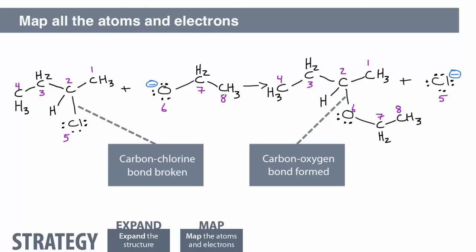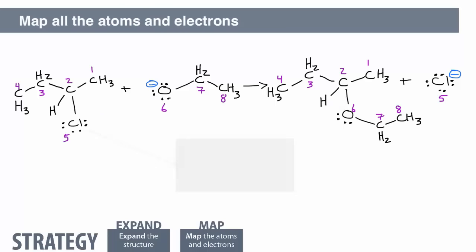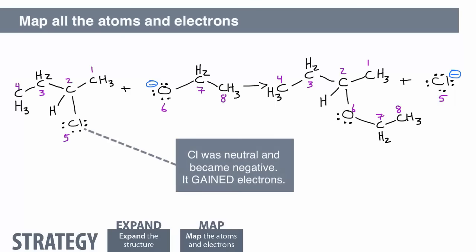Formal charge offers a big hint here to indicate where the electrons have gone. The chlorine was neutral in the starting materials and became negative. Therefore, it accepted electrons. It has a fourth non-bonding electron pair in the products.